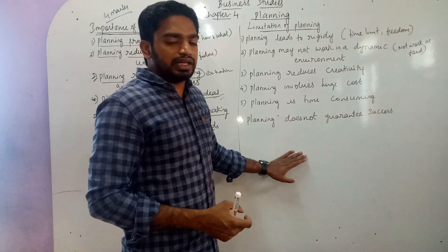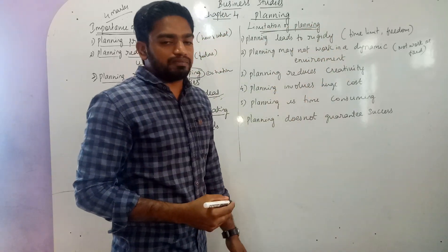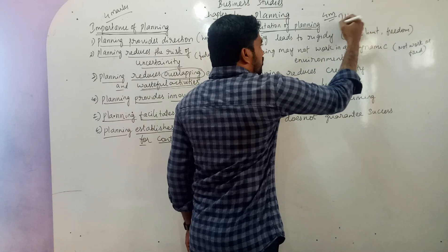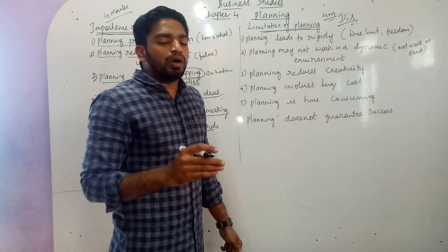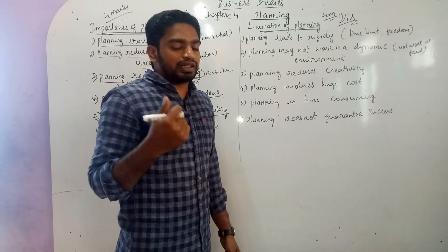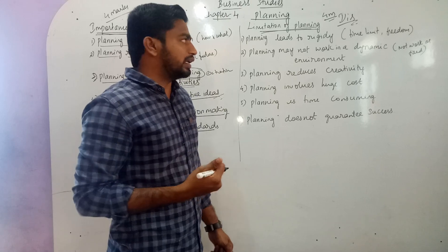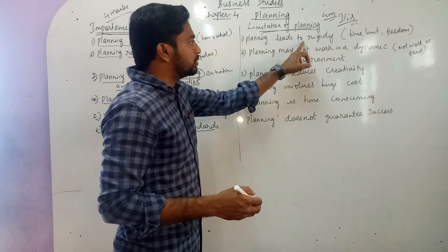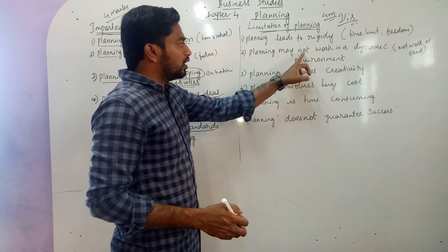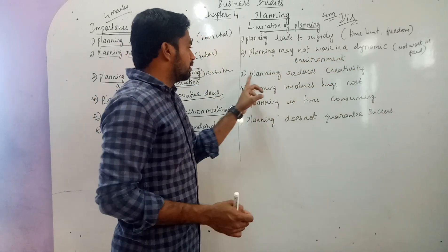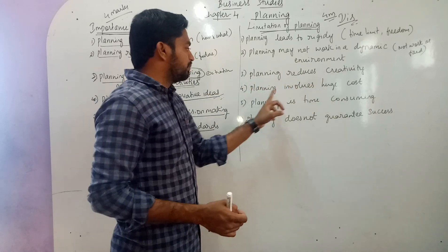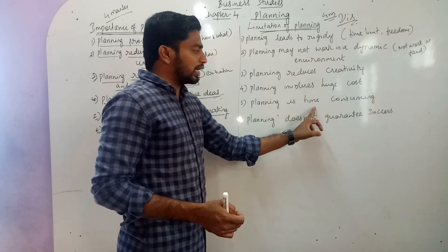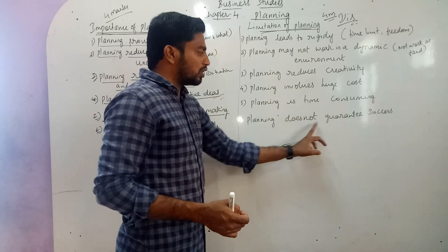Now let us go to the next heading: limitations of planning. Limitations are nothing but the disadvantages of planning — if we make a plan, what are the problems we may face? There are six points. First: planning leads to rigidity. Second: planning may not work in a dynamic environment. Third: planning reduces creativity. Fourth: planning involves huge cost. Fifth: planning is time consuming. Sixth: planning does not guarantee success.